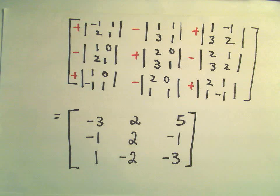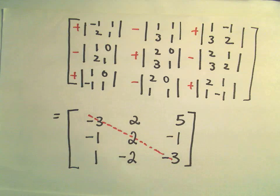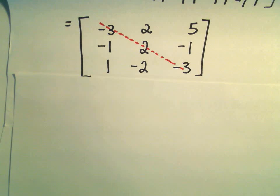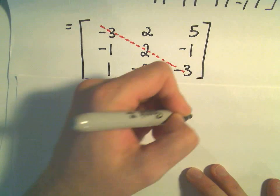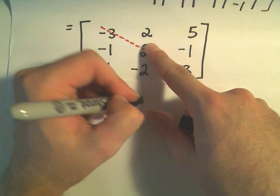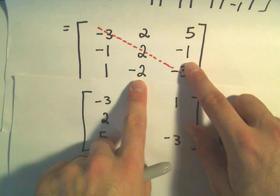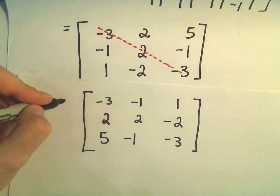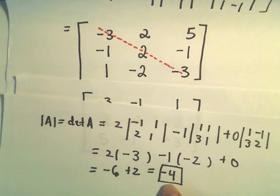Now we have to reflect these values about the diagonal to get the adjugate. The values negative 3, 2, and negative 3 stay in place. We switch 2 and negative 1, switch 5 and 1, and switch negative 1 and negative 2. Then we multiply this by 1 over the determinant, which is 1 over negative 4.